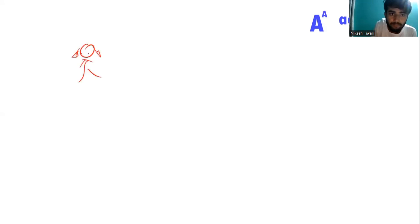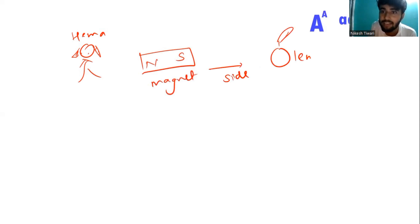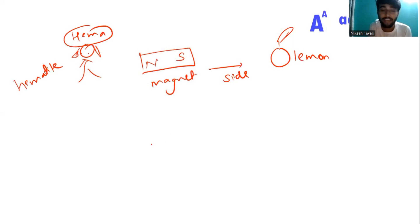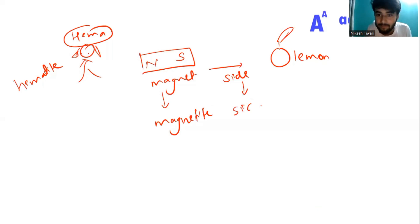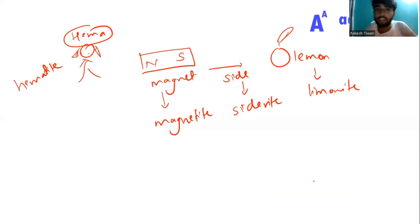Suppose there is a girl named Hema — that helps you remember hematite. Then magnetite, siderite, limonite, iron pyrite, copper pyrite — magnetite is correct.